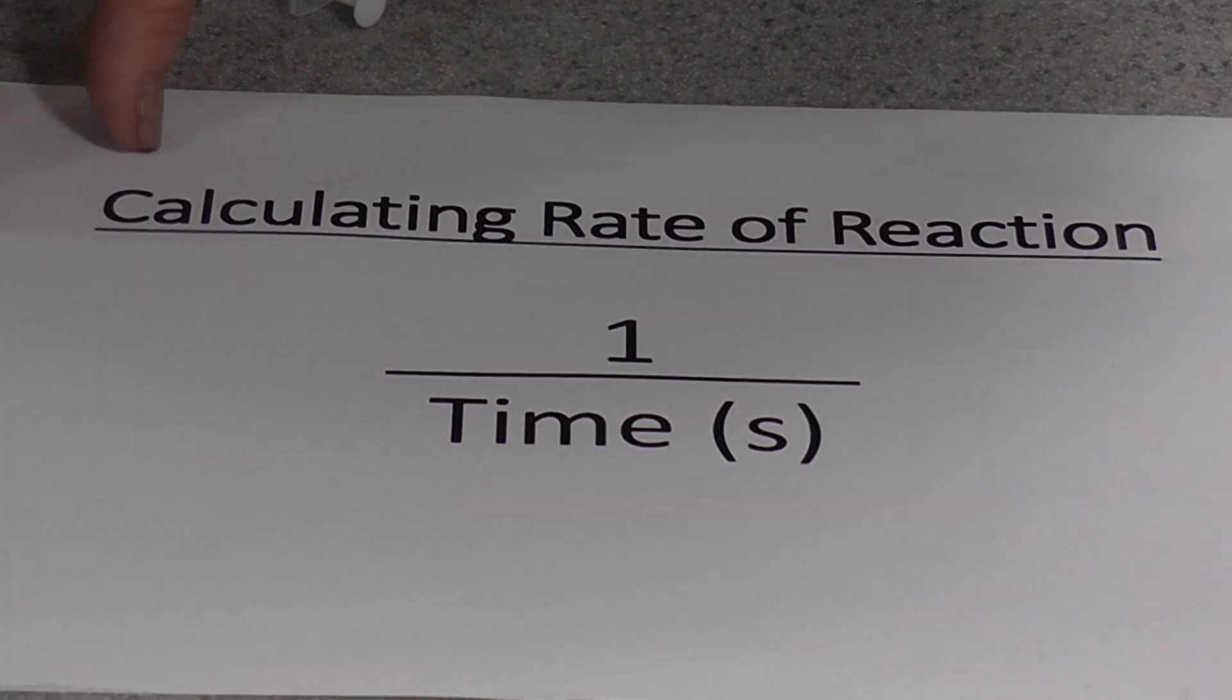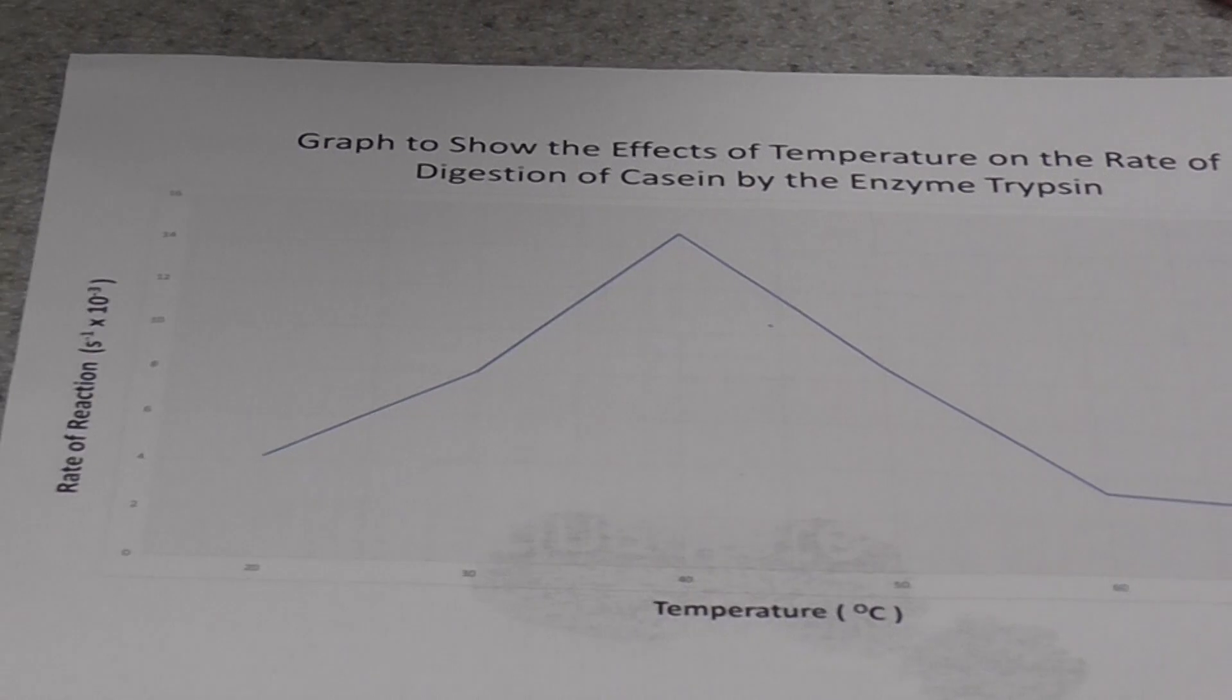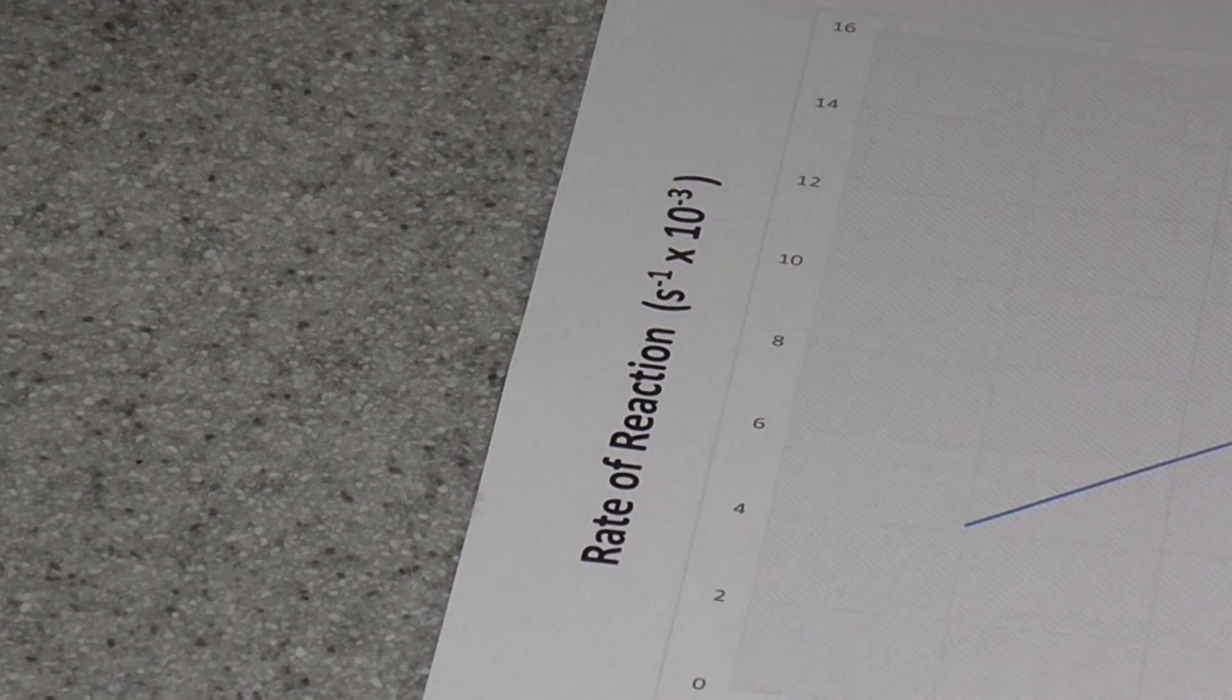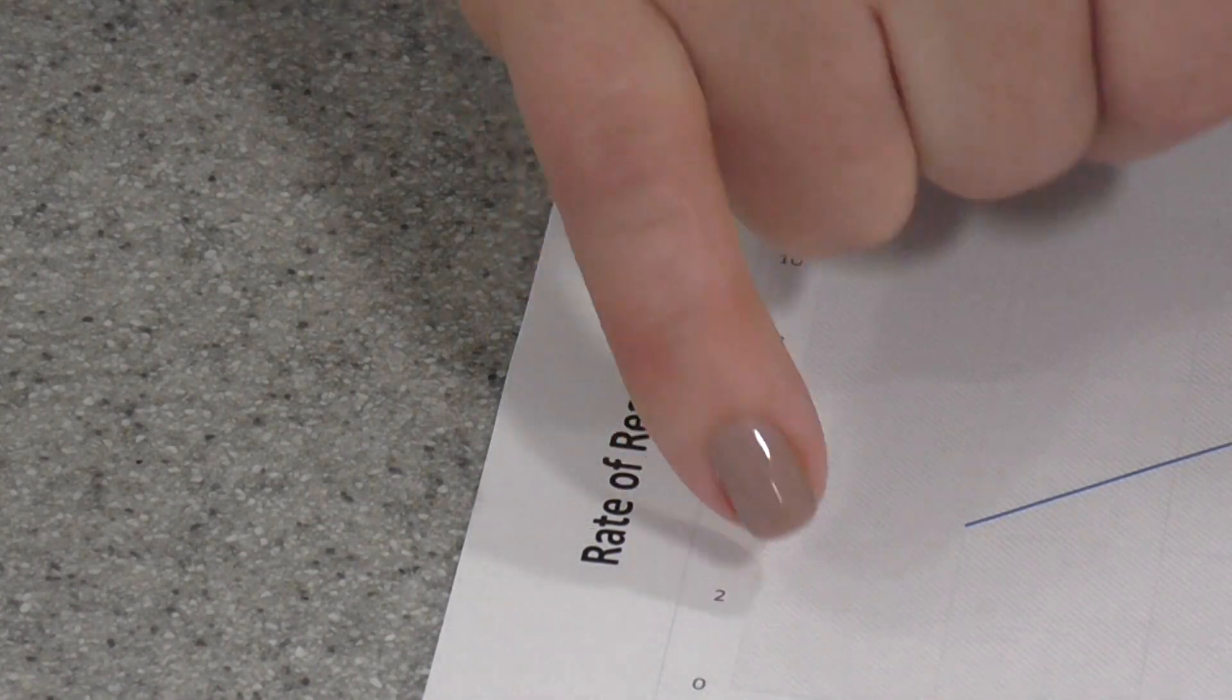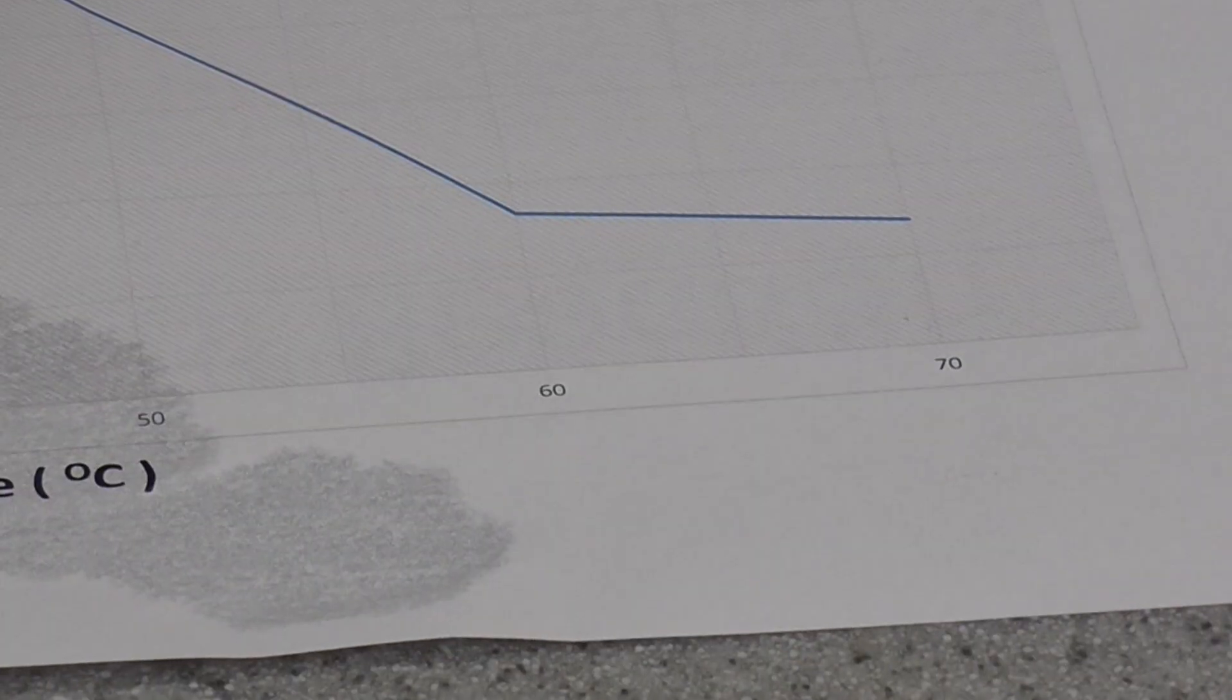Once we've done this for a number of different temperatures, we can actually plot our results to actually see the effects of different temperatures on our reaction rate. We've got our rate of reaction in seconds, times 10 to the minus 3, and we've got temperature across the bottom there, across the X-axis. I did it at 20, 30, 40, 50, 60, and 70 degrees.